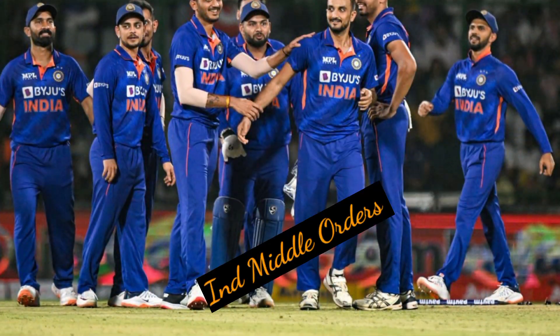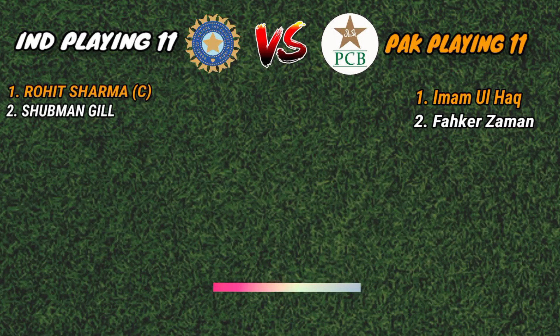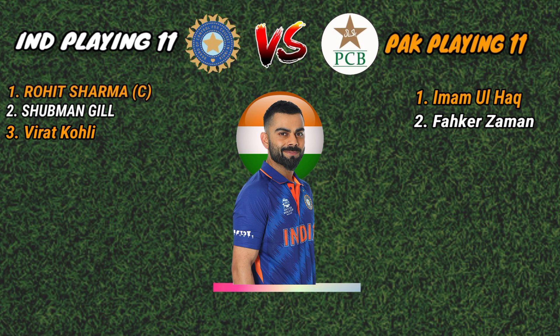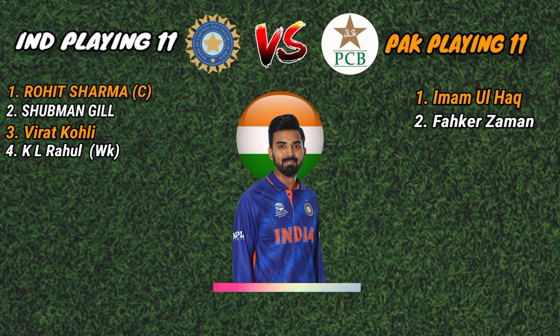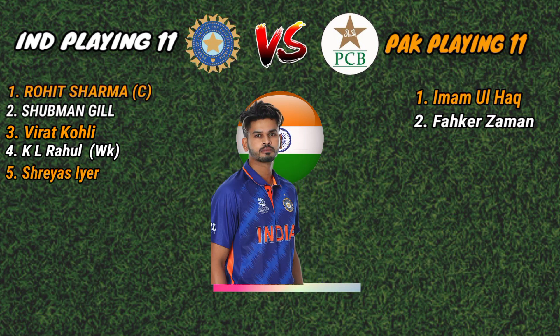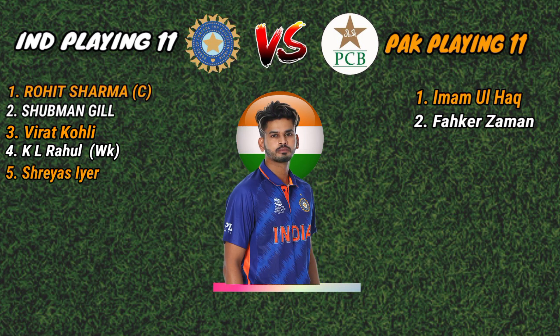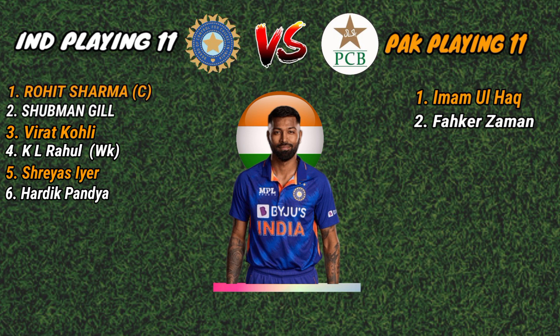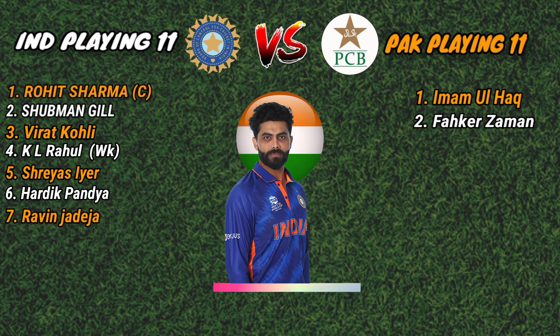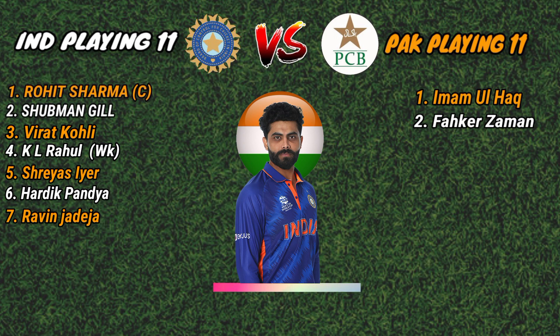India team middle order. No. 3: Virat Kohli, right-hand batsman. No. 4: KL Rahul, wicketkeeper batsman. No. 5: Shesh Iyer, right-hand batsman. No. 6: Hardik Pandya, all-rounder. No. 7: Ravindra Jadeja, all-rounder.